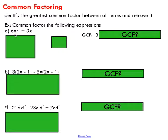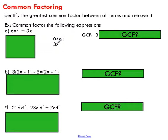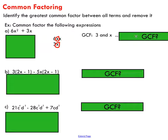We also have to consider the variable portion of the term. I'll represent 6x squared as 6 times x times x, and write 3x below it. This helps you visually identify the GCF for the variable part. The greatest number of x's I can pull out of 3x is just 1x. I could take 2 x's out of 6x squared, but since I only have 1x in the other term, I can only pull out 1x overall.